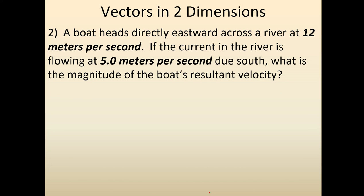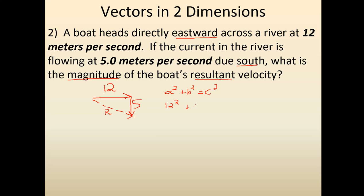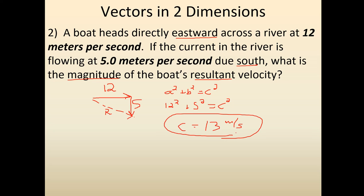Here's the next question — pause the video and work on it. They tell us we go east then south and want to find the resultant magnitude. Since they only ask for magnitude, I just need Pythagorean theorem. Going east 12 and south 5, the resultant is the hypotenuse: a² + b² = c², so 12² + 5² = c², which gives us 13 meters per second. That's it — draw a diagram, simplify it to a right triangle, then do Pythagorean theorem.